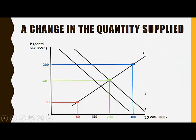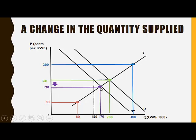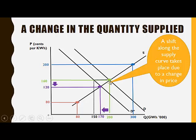Let's consider a decrease in demand. At the original price of 160, quantity demanded will now be 150, while quantity supplied remains at 200. There will therefore be excess supply in this market. This will put downward pressure on the price level. So the price will decrease to 120 cents per kilowatt hour, and at this new price, the equilibrium quantity of 170 will be achieved. The equilibrium quantity will decrease and the price will decrease due to the decrease in demand.